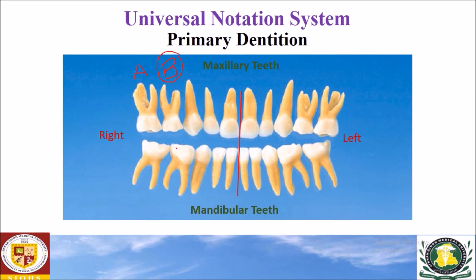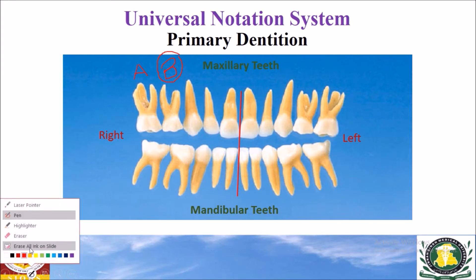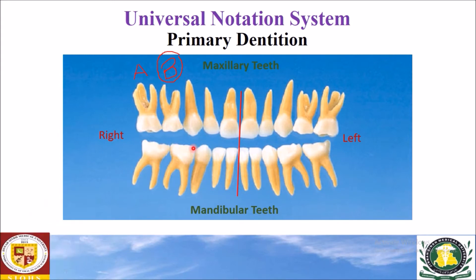Now for the left maxillary central incisor — this tooth is the left maxillary central incisor. For the left maxillary central incisor, the notation in the universal notation system is alphabet F.